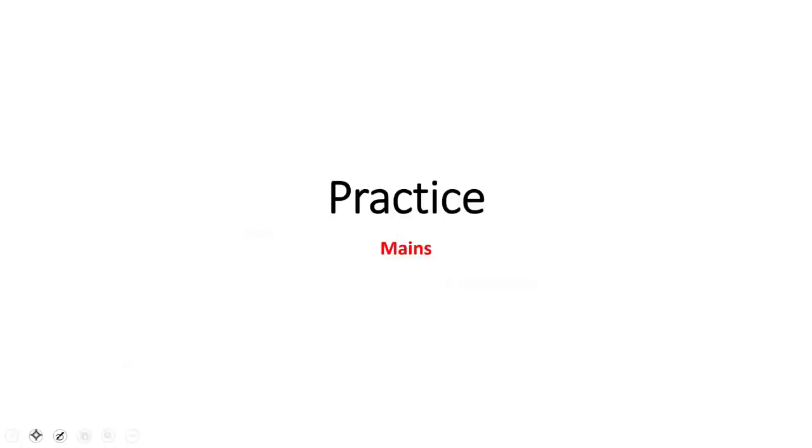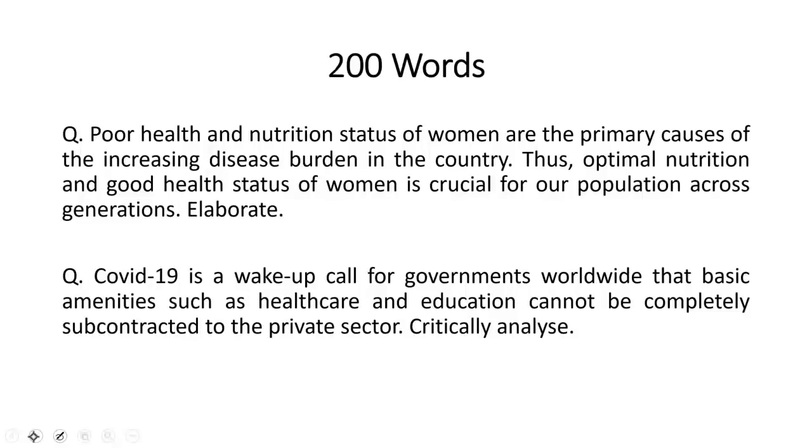Let's look at the practice questions for Mains, answer should be in less than 200 words. Question No. 1. Poor health and nutrition status of women are the primary causes of the increasing disease burden in the country. Thus, optimal nutrition and good health status of women is crucial for our population across generations. Elaborate. Question No. 2. COVID-19 is a wake-up call for governments worldwide that basic amenities such as healthcare and education cannot be completely subcontracted to the private sector. Critically analyze.